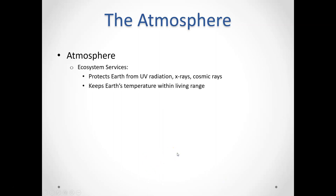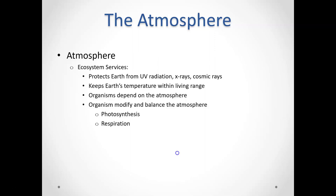The atmosphere provides a variety of services — things that natural systems do for us without us having to pay for them. As long as the system is intact and working well, these services are provided for free. The atmosphere protects us from things coming from space: UV radiation, X-rays, and different types of cosmic rays. It also keeps our temperature within a living range, so some of the solar energy coming to Earth is absorbed by land and held in by our atmosphere, making our planet habitable.